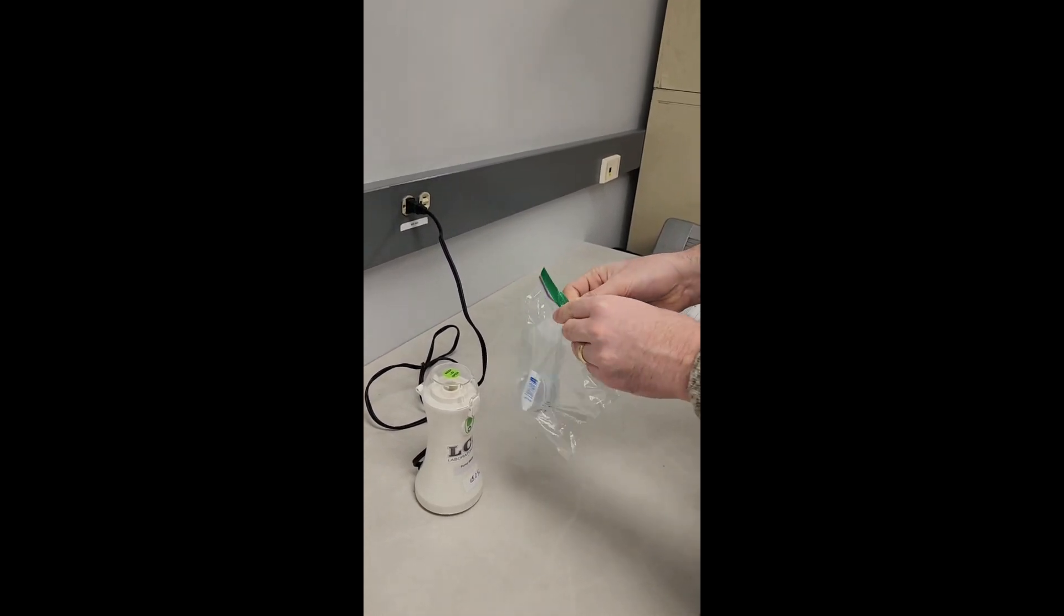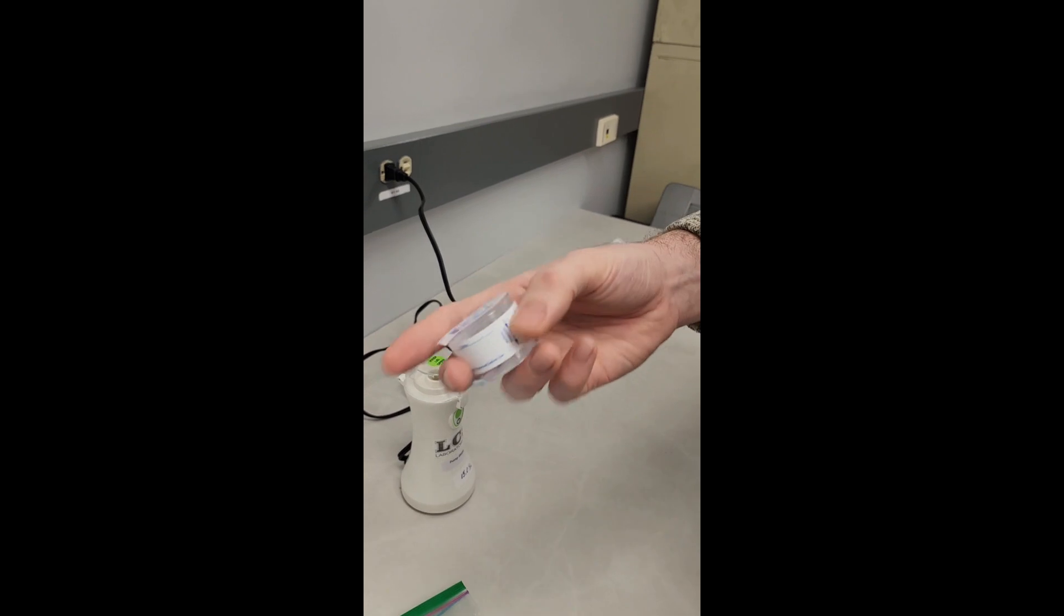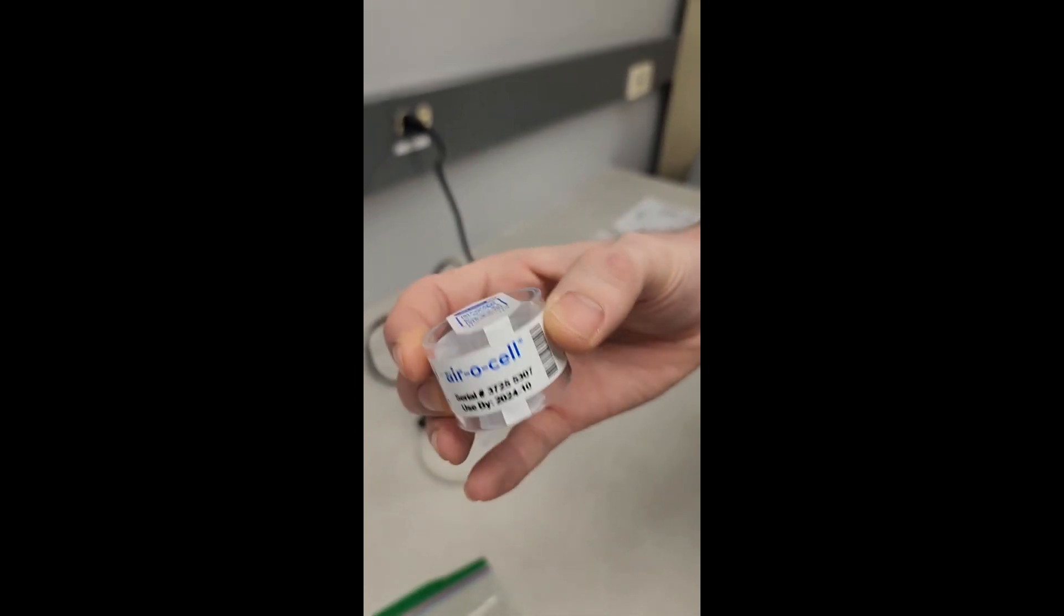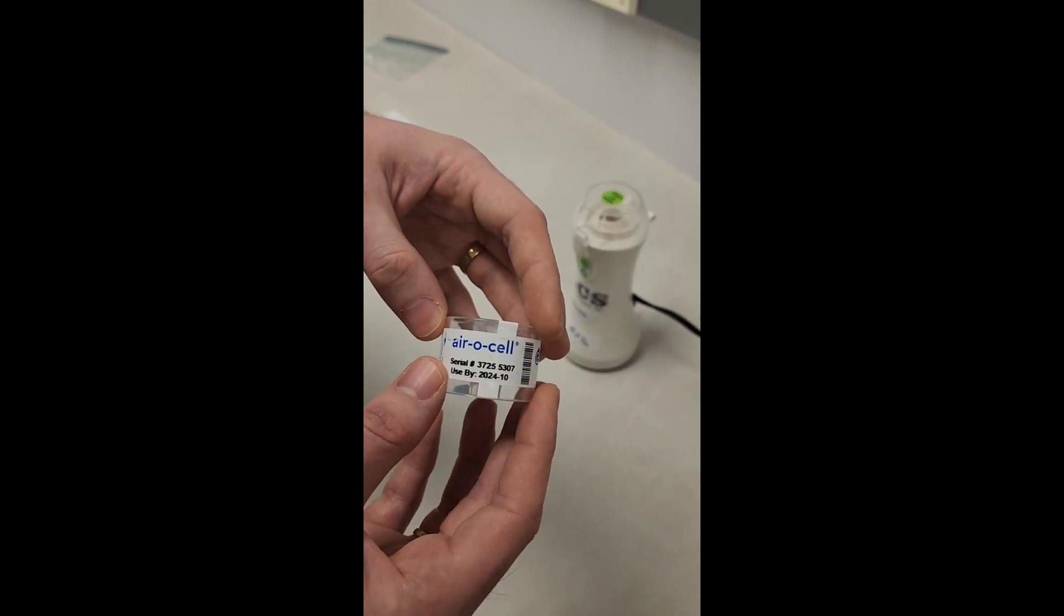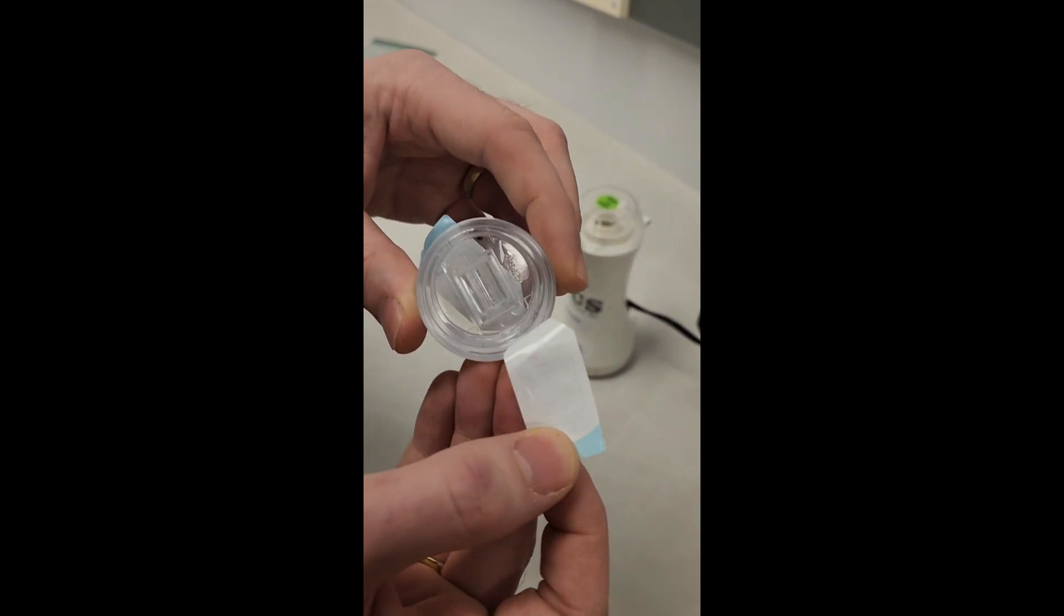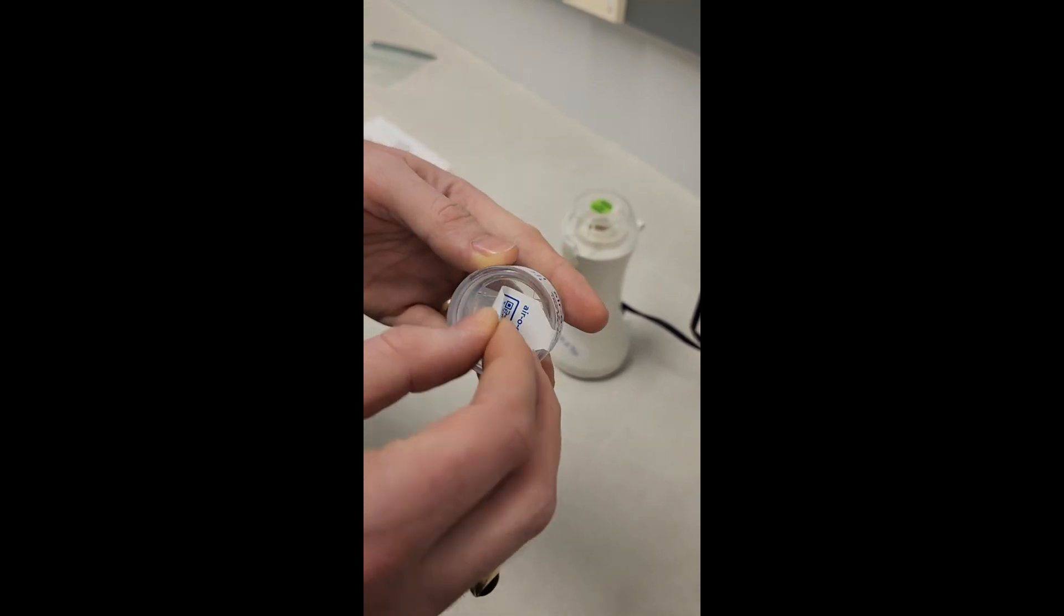Remove one of the mold sampling cassettes from the provided bag. Each cassette has two holes which are covered with protective tape. Removing the protective tape from either end of the mold sampling cassette will reveal a rectangular hole and a circular hole.